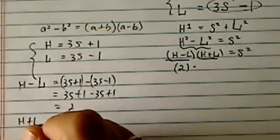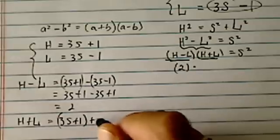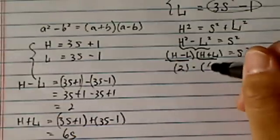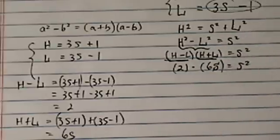All right, let's take a look at H plus L. 3S plus 1 plus 3S minus 1, I have 6S then. 6 times S equals S squared. Hey, that's not too bad.